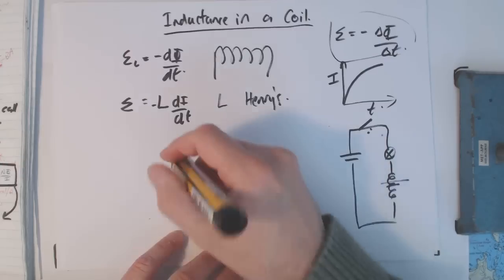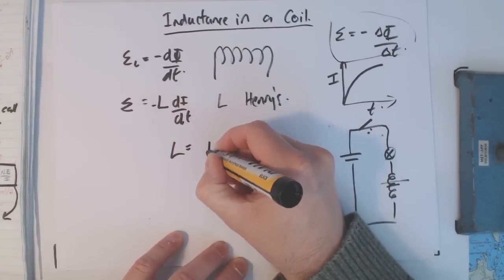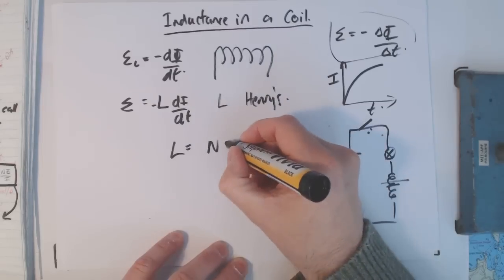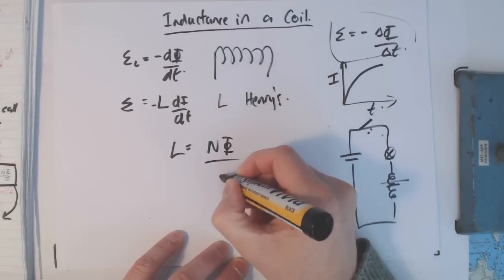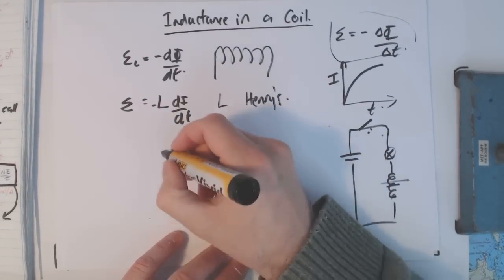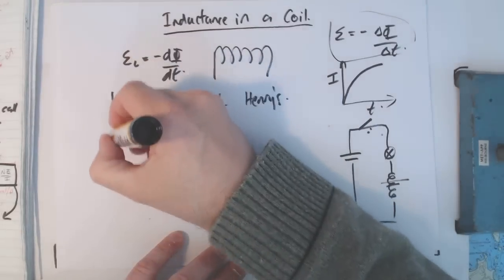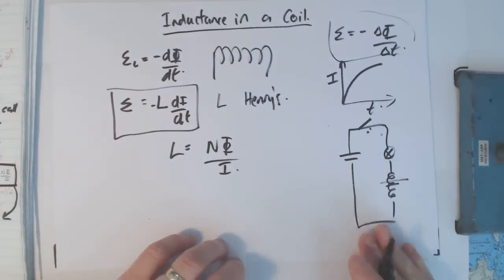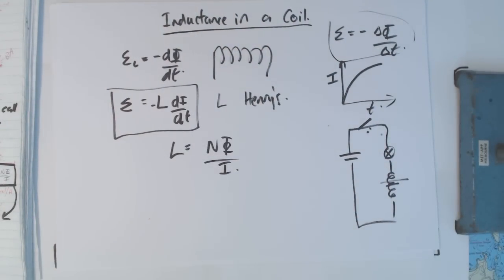A few things about L: L is also equal to the number of turns in your coil times the amount of flux divided by the current (L = NΦ/I). Don't need to know that, but you do need to know this. So that's the inductance in a coil. That's how it is.